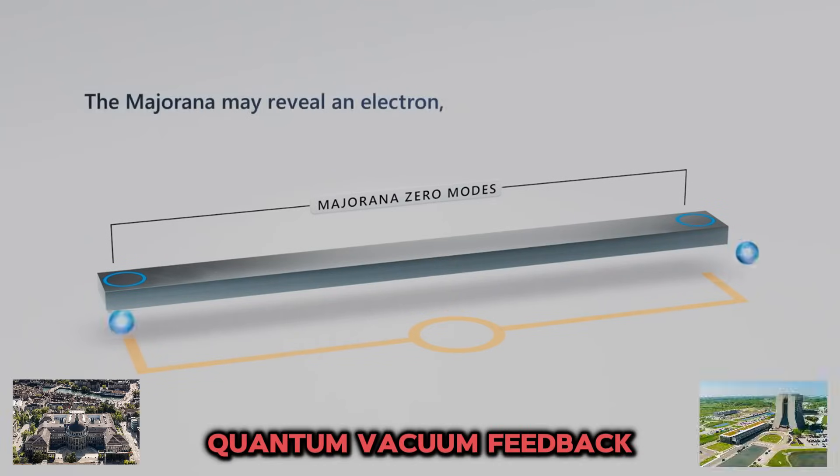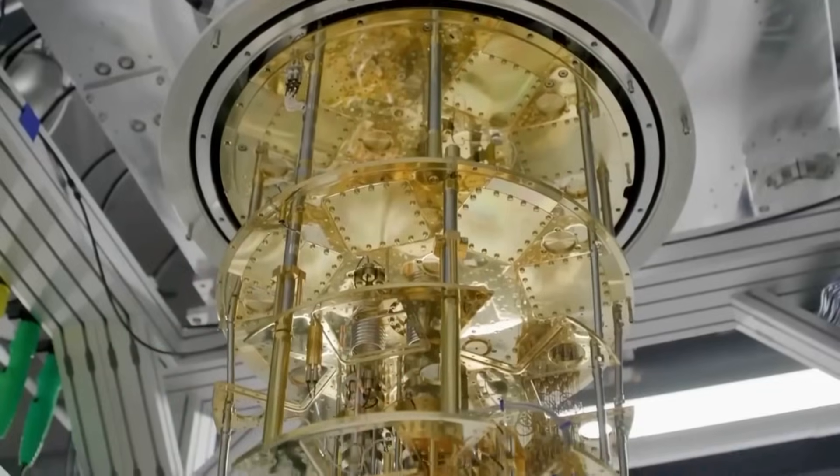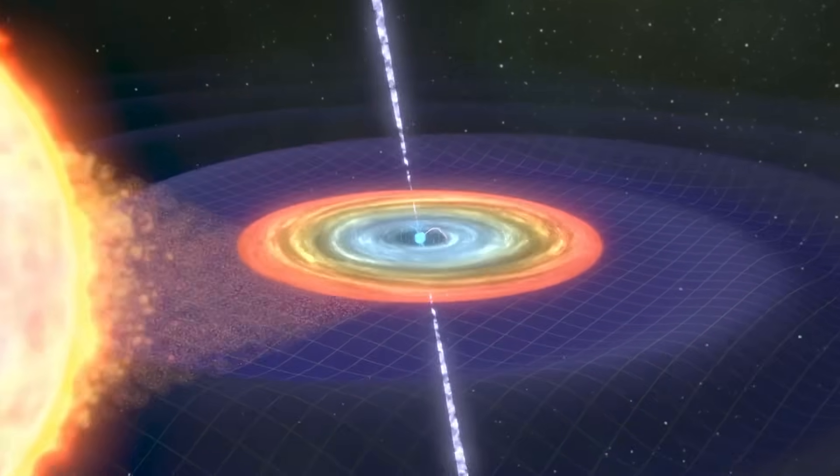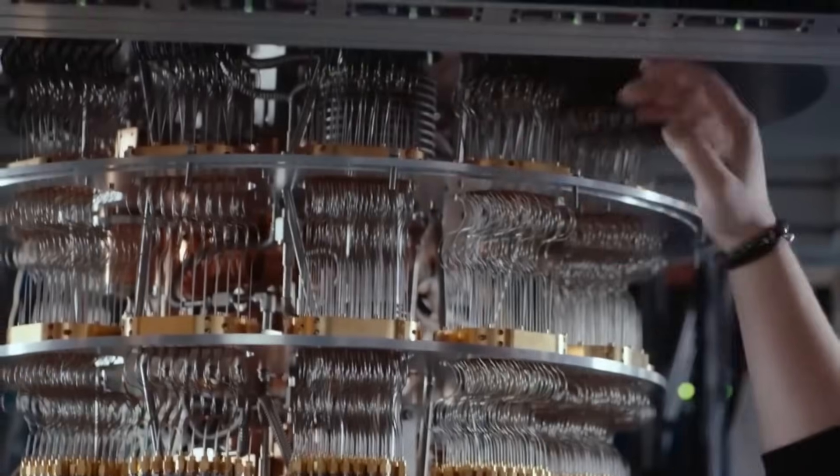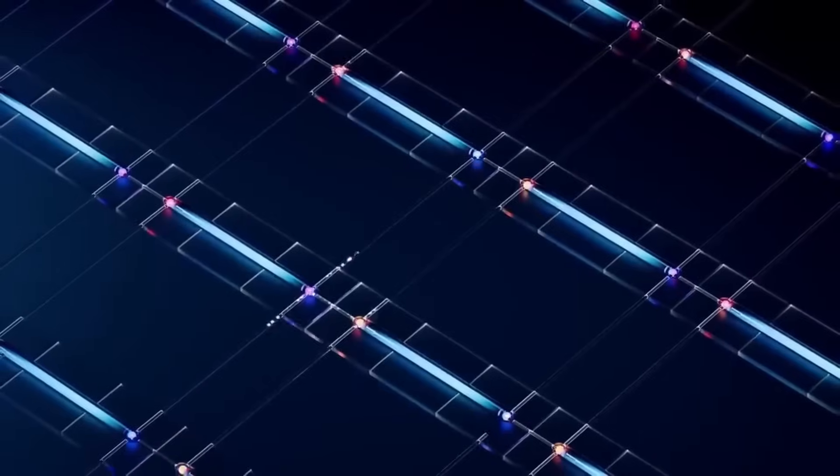Quantum vacuum feedback: In this scenario, Saturn's icy rings act as a reflective boundary for vacuum fluctuations. The interplay of charged ice grains in the magnetospheric plasma could set up standing quantum field modes, causing coherent subharmonic oscillations in the Casimir-like gaps between particles.